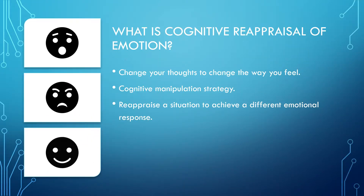Cognitive reappraisal of emotion is a type of emotion regulation strategy. It involves changing your thoughts to change how you feel about a situation. An individual learns to reinterpret or reappraise a situation in a different way with the aim of achieving a better emotional response.